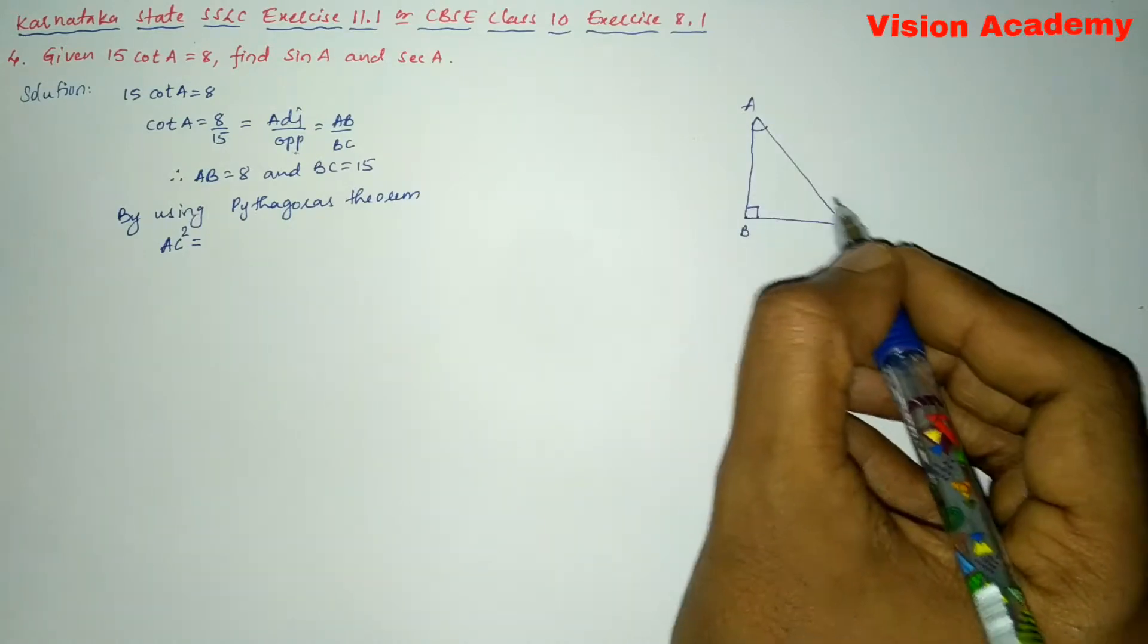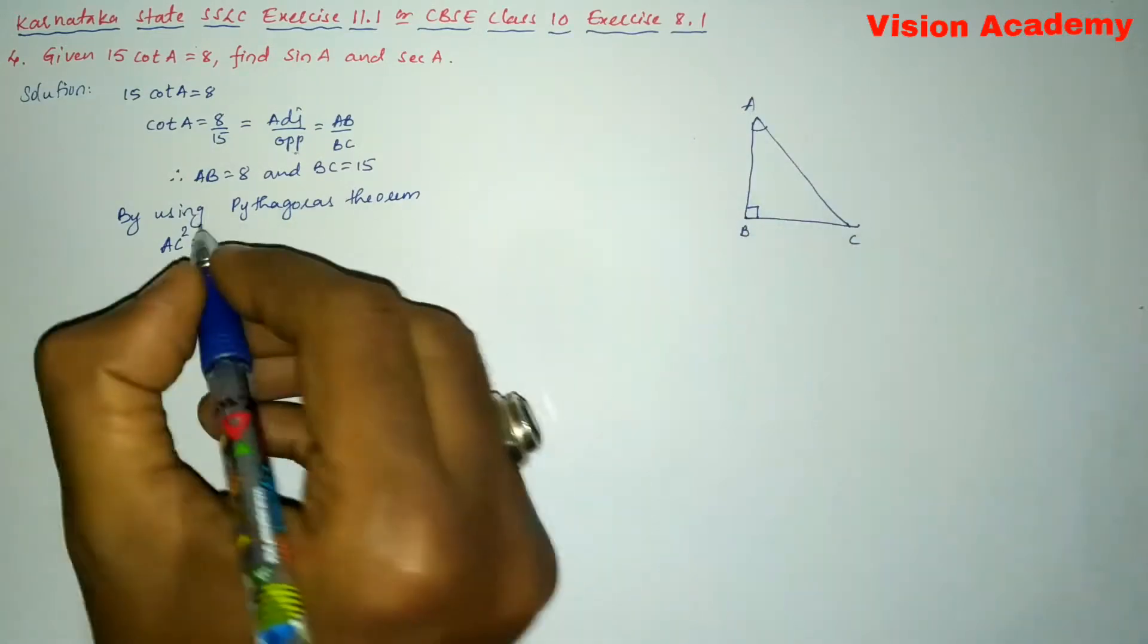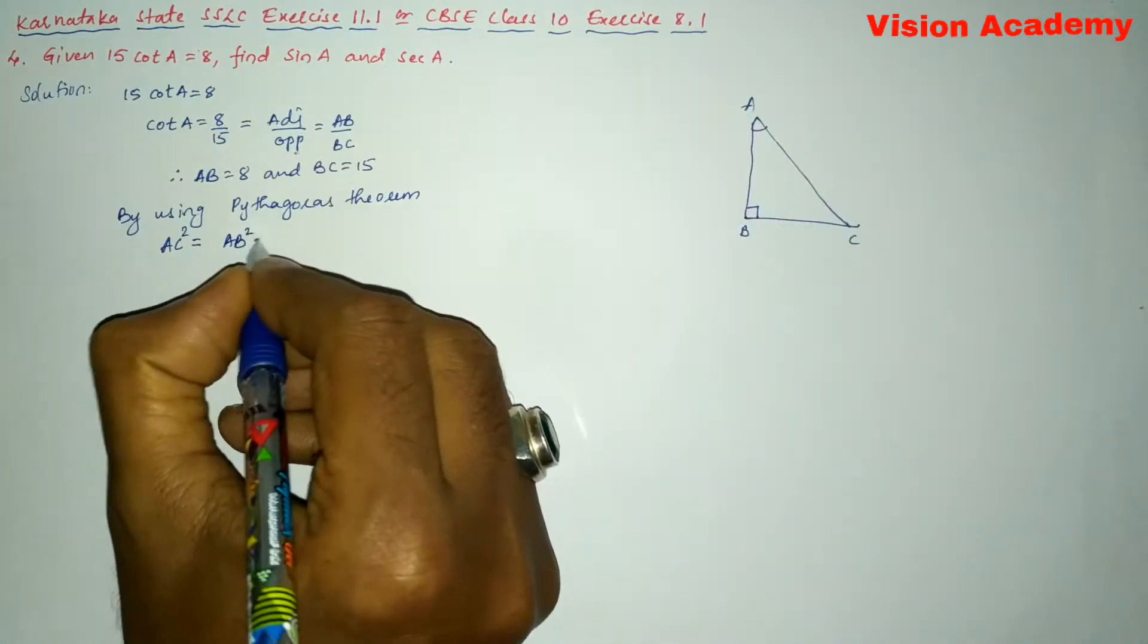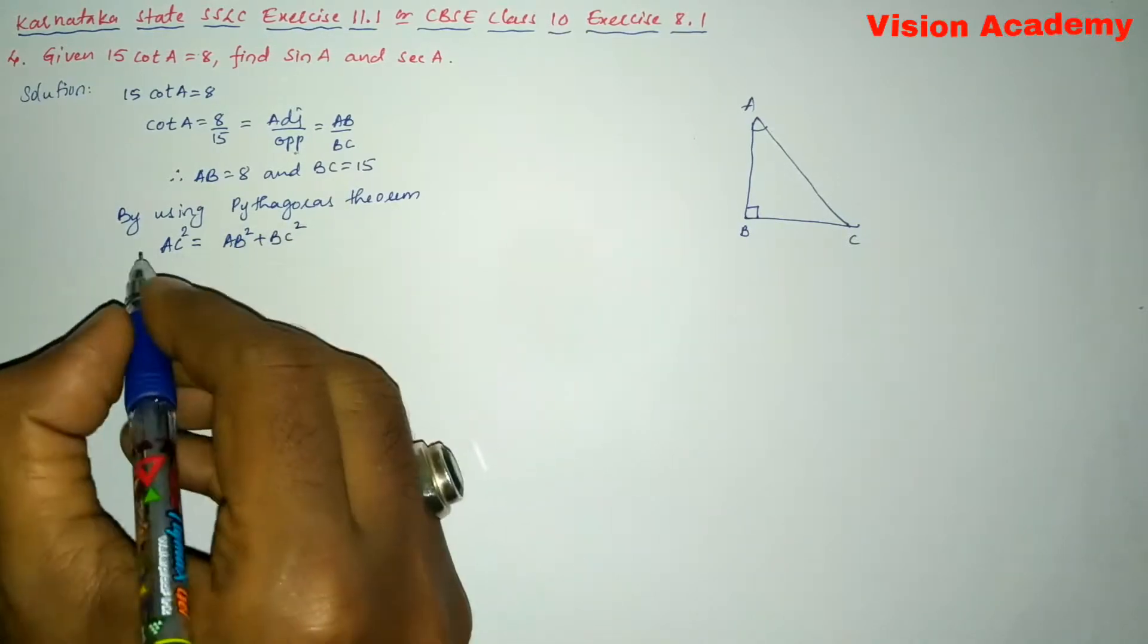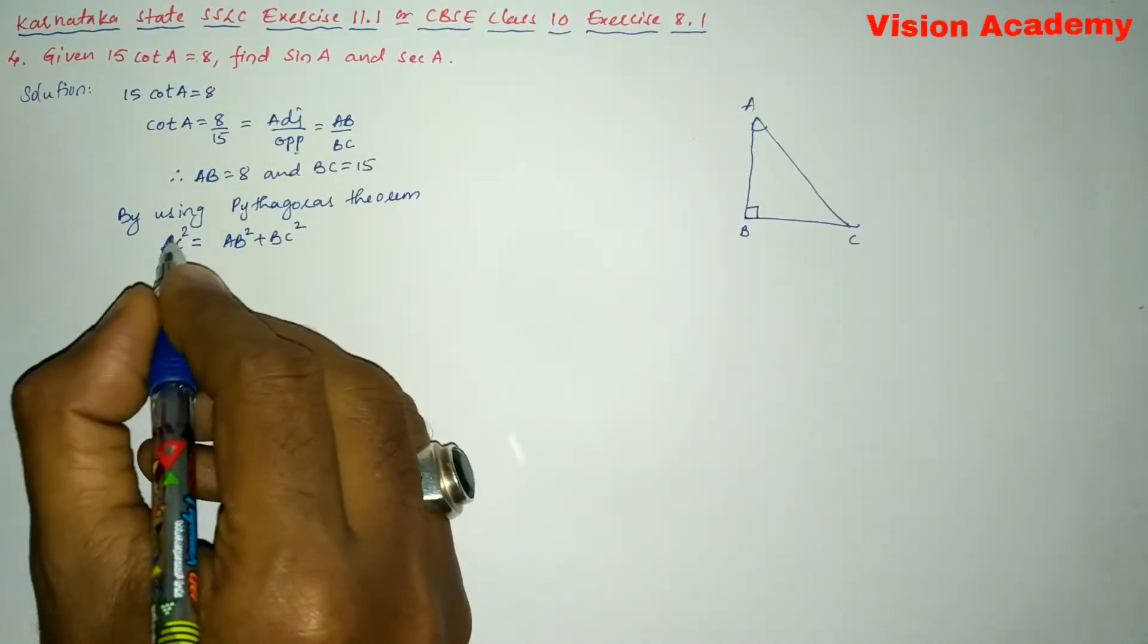So here AC square is hypotenuse square: AB square plus BC square. Here we will write AB square plus BC square. So here we need to find AC.